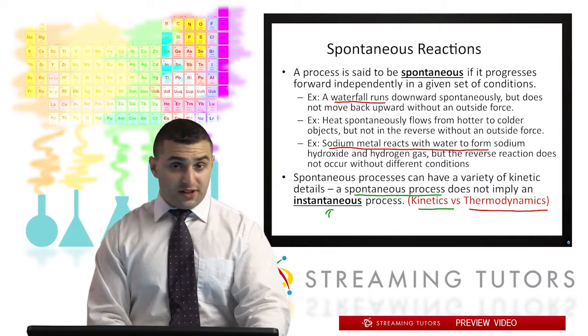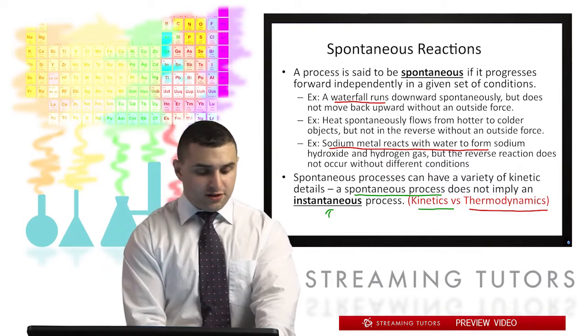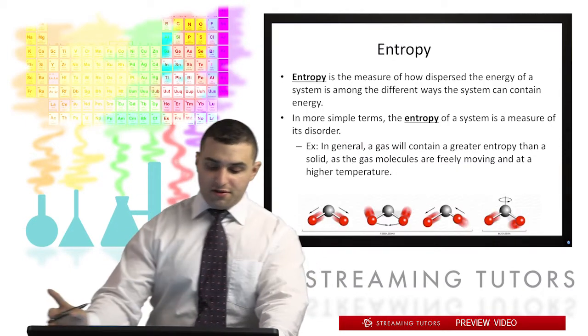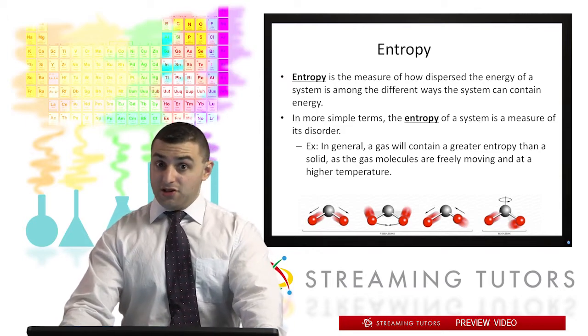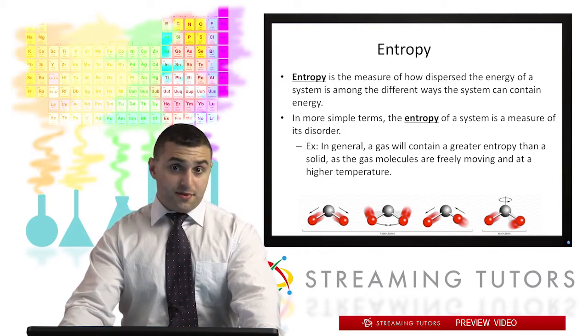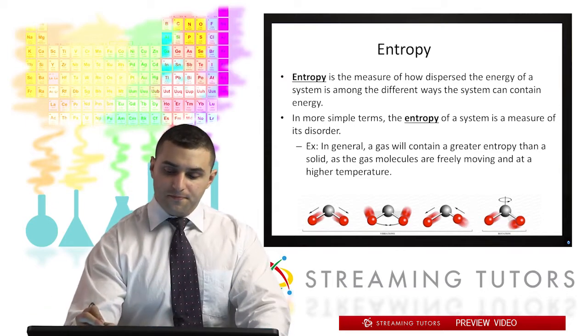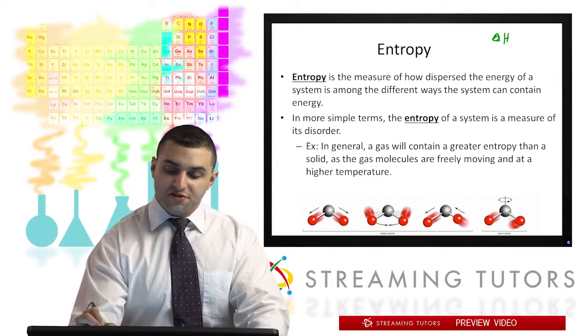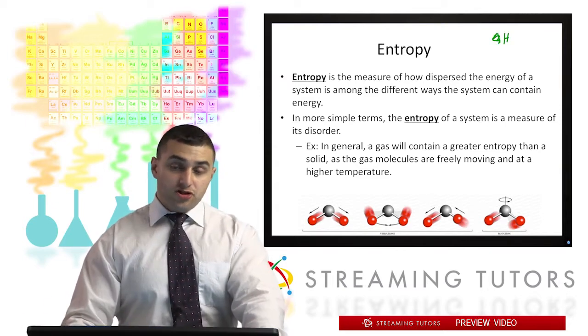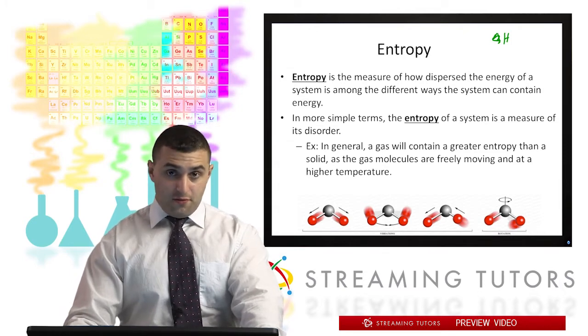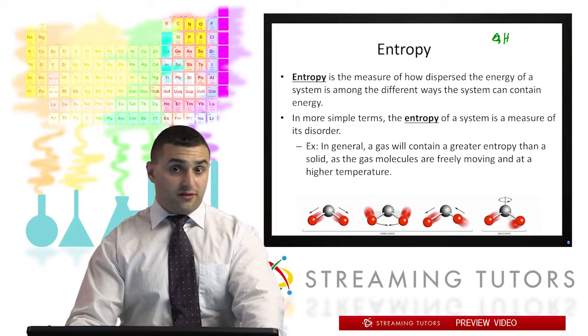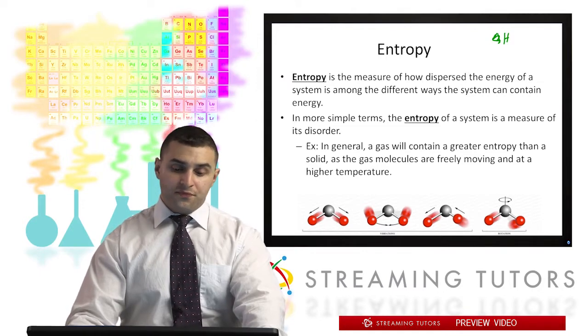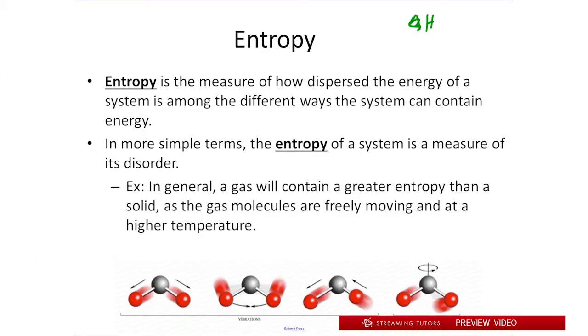So now that we've established what a spontaneous reaction is, let's get into our first thermodynamic principle, which is entropy. So recall that in general chemistry one, we went in depth with enthalpy. That was delta H or just H. So entropy and Gibbs free energy are the other two primary thermodynamic constants and values that we'll go into. So the sign for entropy is an S.